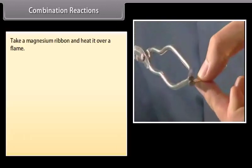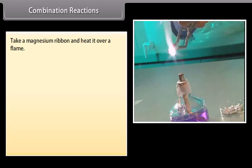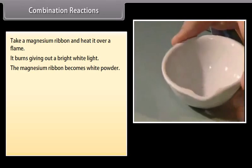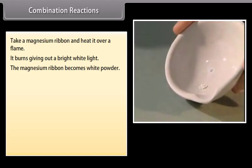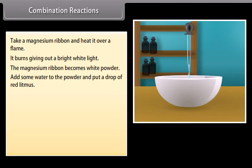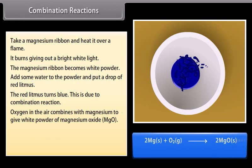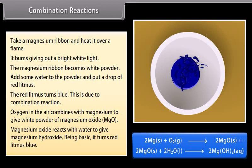Activity. Take a magnesium ribbon and heat it over a flame. It burns, giving out a bright white light, and the magnesium ribbon becomes white powder. Add some water to the powder and put a drop of red litmus — the red litmus turns blue. This is due to a combination reaction: oxygen in the air combines with magnesium to give magnesium oxide, which then reacts with water to give magnesium hydroxide. Being basic, it turns red litmus blue.